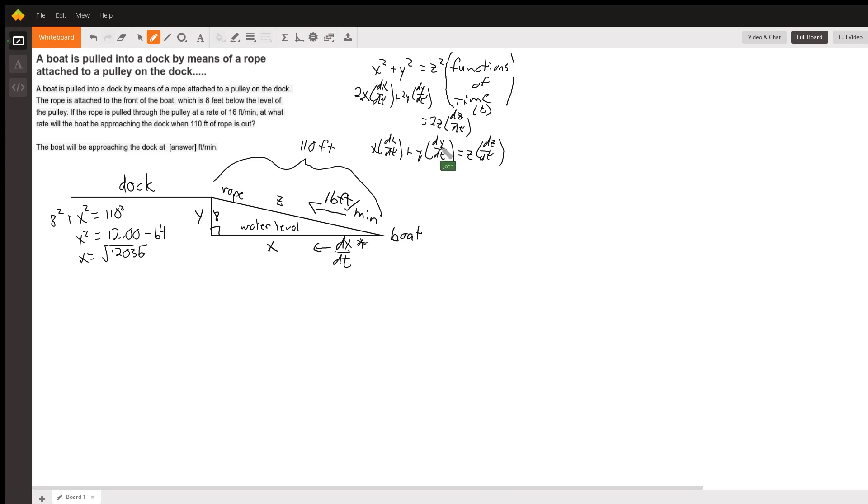Now, one thing to note here is that dy over dt, well, how fast is y changing? Well, the answer is it's not. It is not changing. This height is not changing at any point, so this right here is just 0.